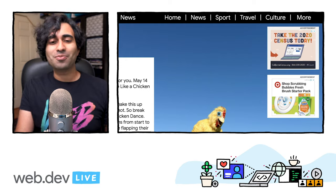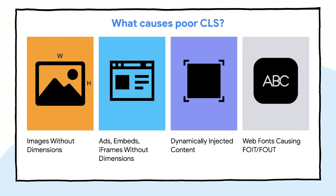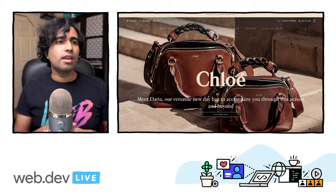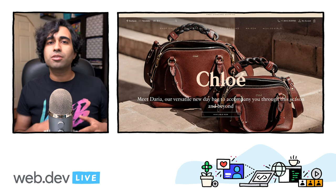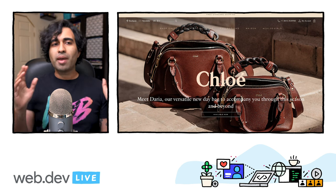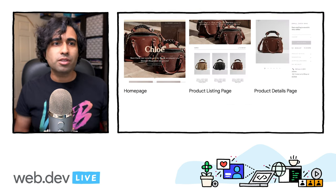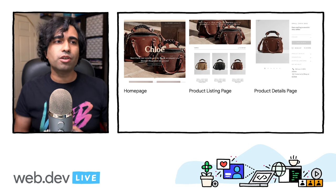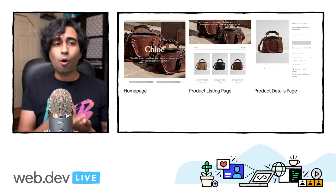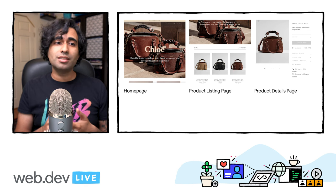So what causes poor CLS? First of all we've got images without dimensions, ads, embeds or iframes without dimensions, dynamically injected content, and web fonts that might cause a flash of unstyled content. Chloe is a French luxury fashion house — a go-to brand for luxury apparel, handbags, and fragrances. They've recently been focused on improving cumulative layout shift on all their main pages: their homepage, product listings page, and product details page.